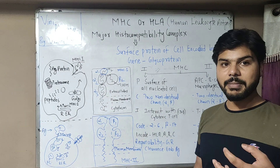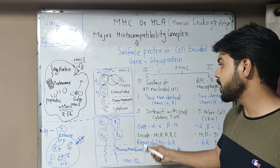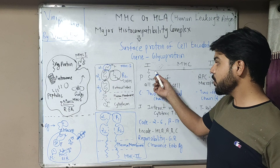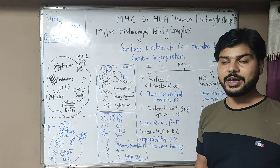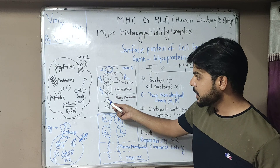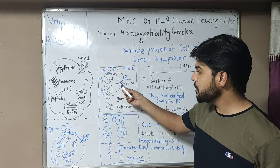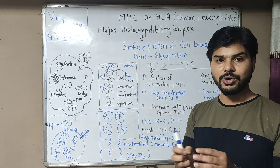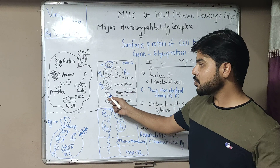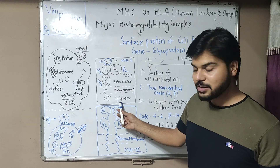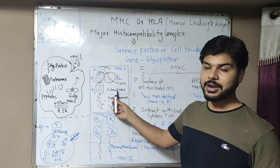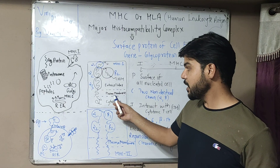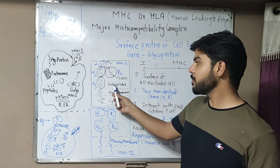Now let us talk about the structure. For MHC Class 1, the complex consists of two non-identical chains. There is an alpha chain, which is long, and a beta chain, which is short. Looking at the structure, you can see the cytoplasm, the plasma membrane, and the extracellular part. The alpha chain spans three areas.